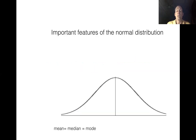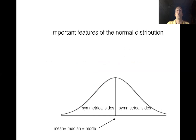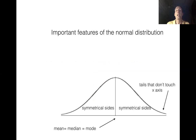The first property: when we think of where the mean, median, and mode are, they're all right in the dead center of the curve. If we look at the left and right sides of the curve, both sides are symmetrical — which is exactly why they're mirror images of each other. Also, look at the tails of the curve: the tails become infinitely closer to the x-axis but won't actually touch it.